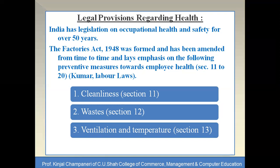The very first provision is cleanliness under Section 11. Every factory must be kept clean and free from dirt. Daily cleaning must be carried out for benches, staircases, passages, and floors. Floors must be washed at least once a week with some disinfectant. Walls, doors, and windows must also be properly cleaned and painted as necessary.